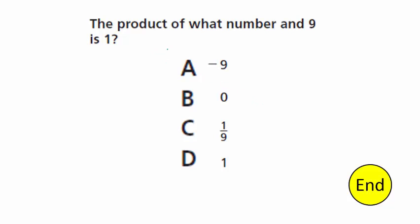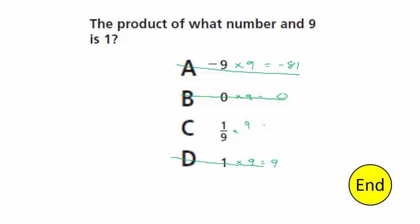The product of what number and 9 is 1? If I didn't know, I'd check each option: negative 9 times 9 equals negative 81 — not my choice. 0 times 9 equals 0 — not my choice. 1 times 9 equals 9 — not my choice. When I multiply 1/9 times 9, I get 9 over 9, which simplifies to 1. My choice is C.